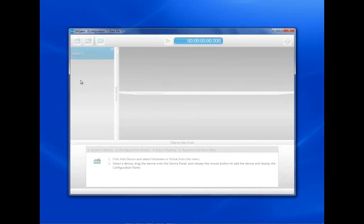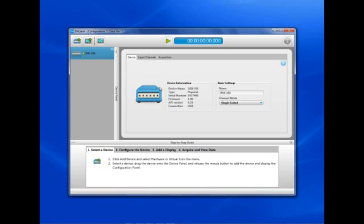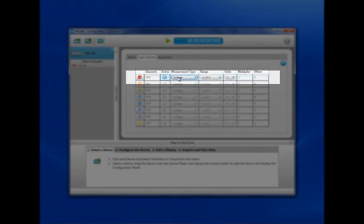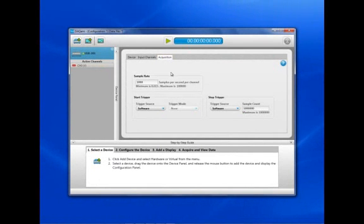Next, you need to configure your USB-201. First enable the channels to be used. Today, we will be using channel zero. You can also set up your acquisition parameters here as well.